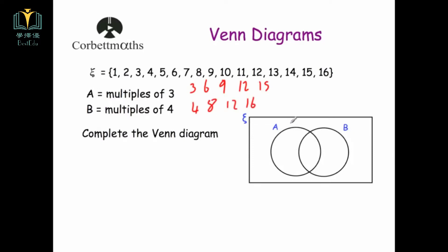We're going to put these into the Venn diagram. First, the middle section — anything that's in A and in B — would be a number that's a multiple of both 3 and 4. Looking at both lists, 12 clearly satisfies that, so we put 12 in the middle. The left section is anything just in A but not B, so we put 3, 6, 9, and 15 there. The right section is anything that's a multiple of 4 but not a multiple of 3: so 4, 8, and 16. Around the outside goes anything not a multiple of 3 or 4.